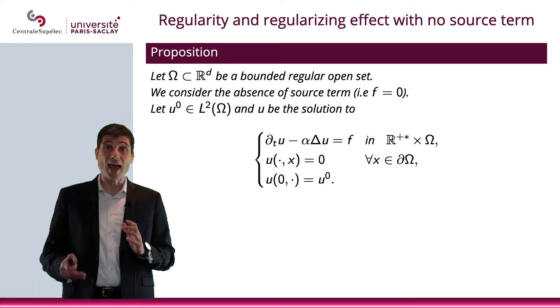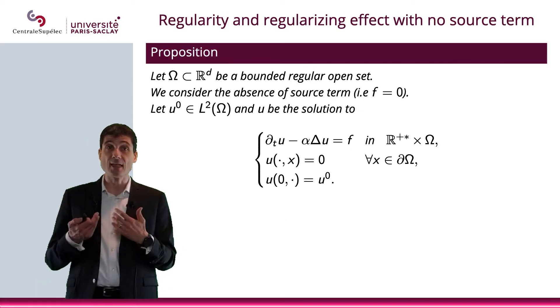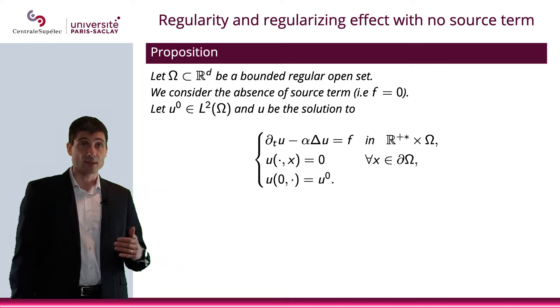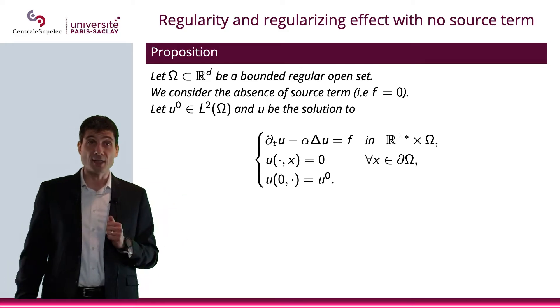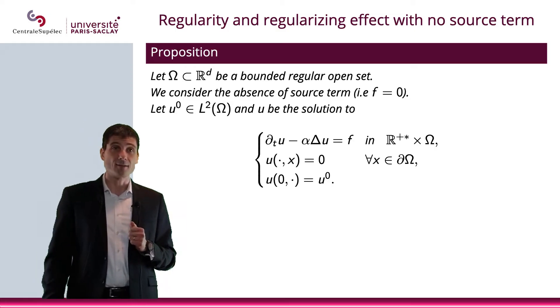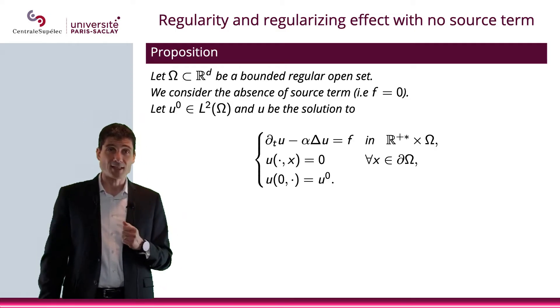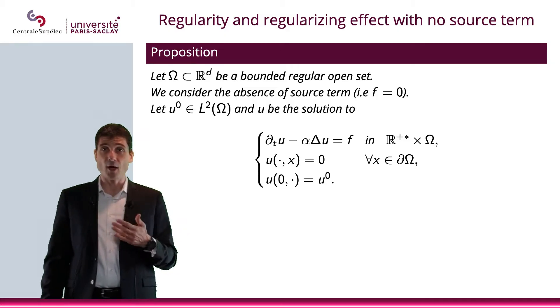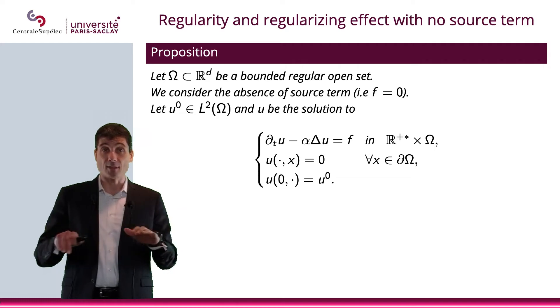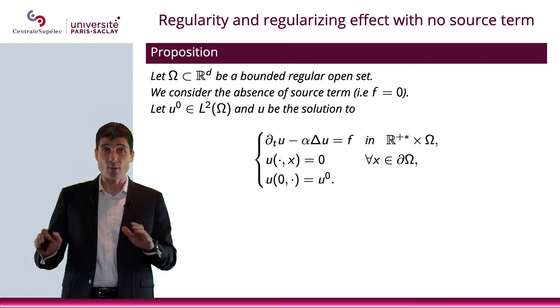First, let's see what happens if f is equal to 0. In other words, I have no source term. So I'm considering Ω included in R^d, where d is the number of the dimension in space, which is bounded, a regular open set. And we consider again the absence of source term f equals 0.